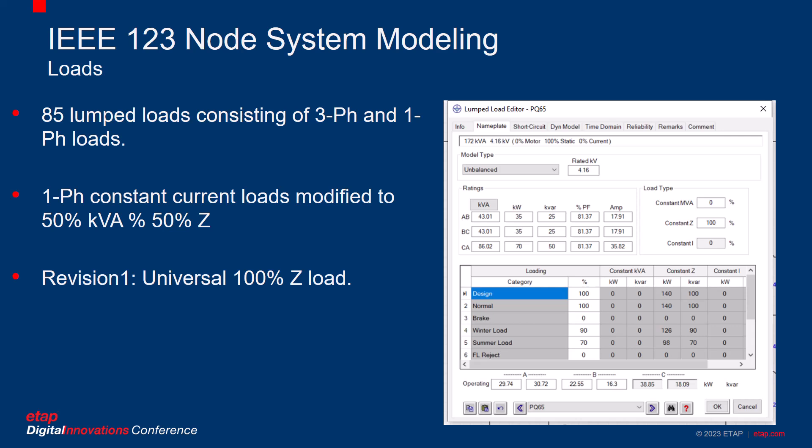The load ratings have further been modified in revision one. Revisions in ETAP are an excellent aspect of its multidimensional database where users can modify ratings of their equipment whilst still retaining the connections and the presentation. Therefore, in revision one, I have modified all the loads to be 100% constant impedance. This will particularly be useful for studies like volt-var optimization, where a reduced voltage will result in lower consumption of power.